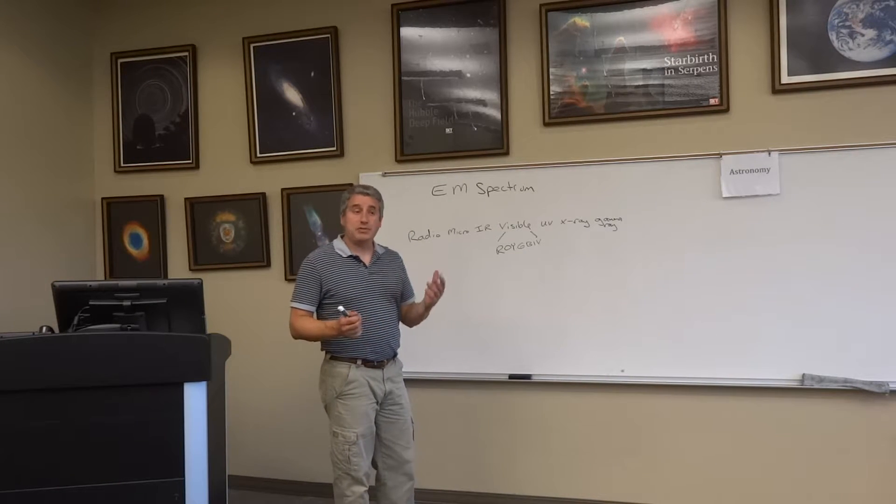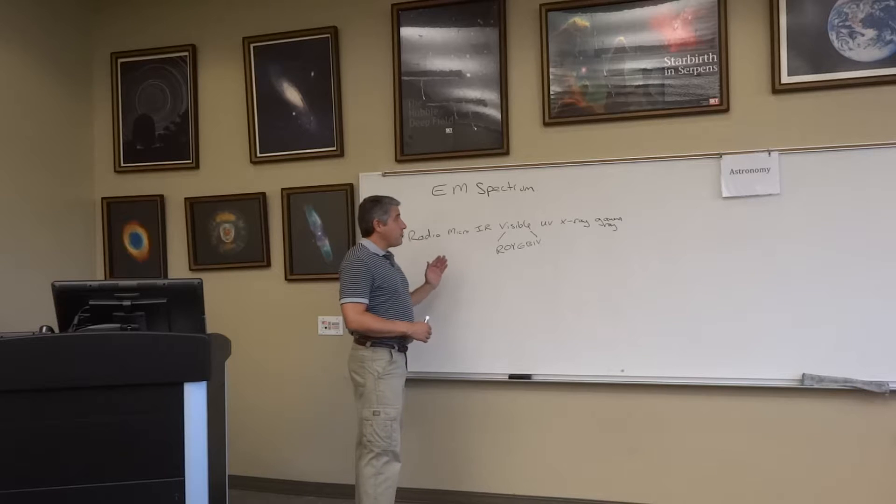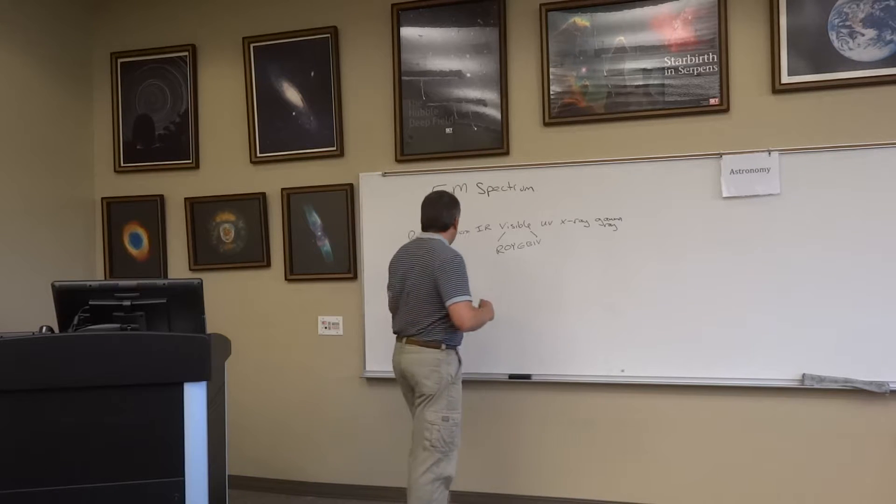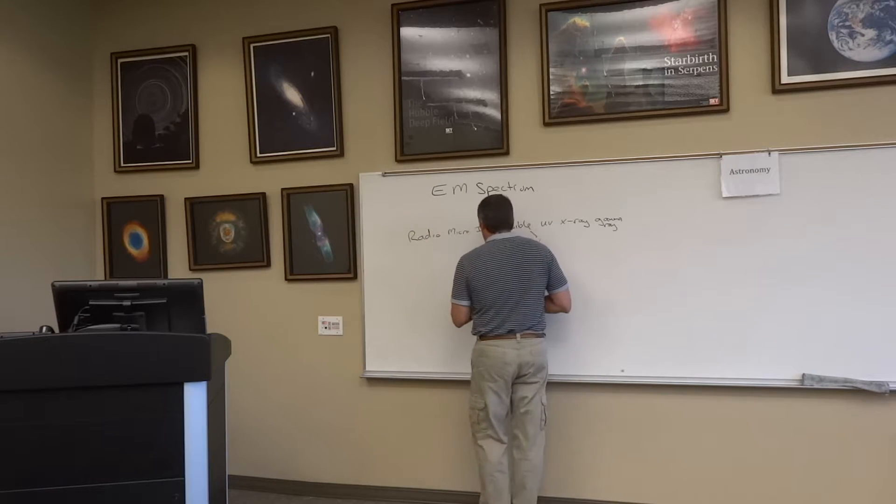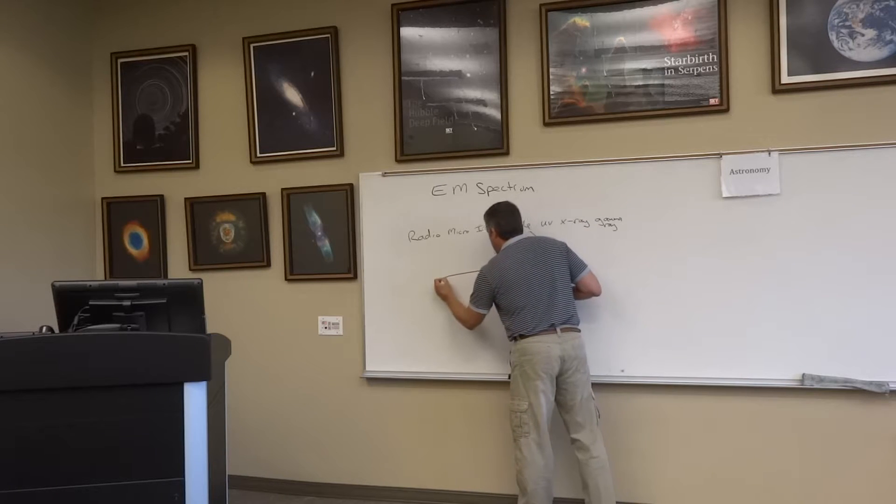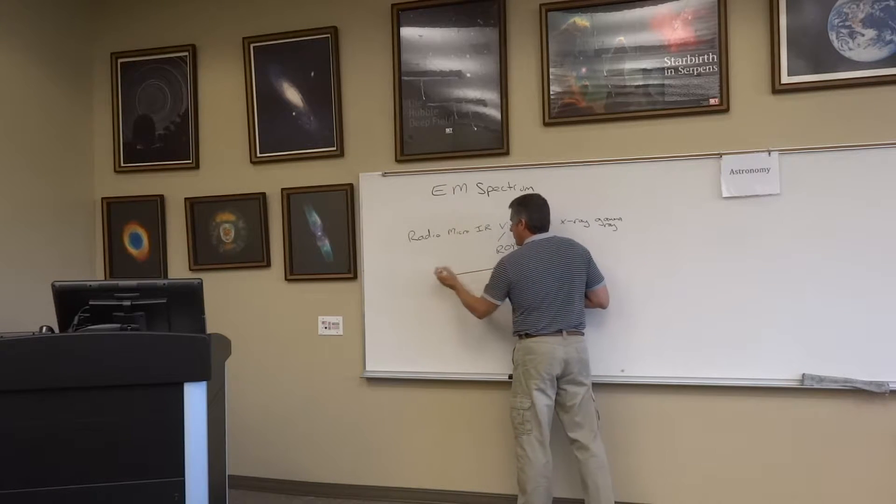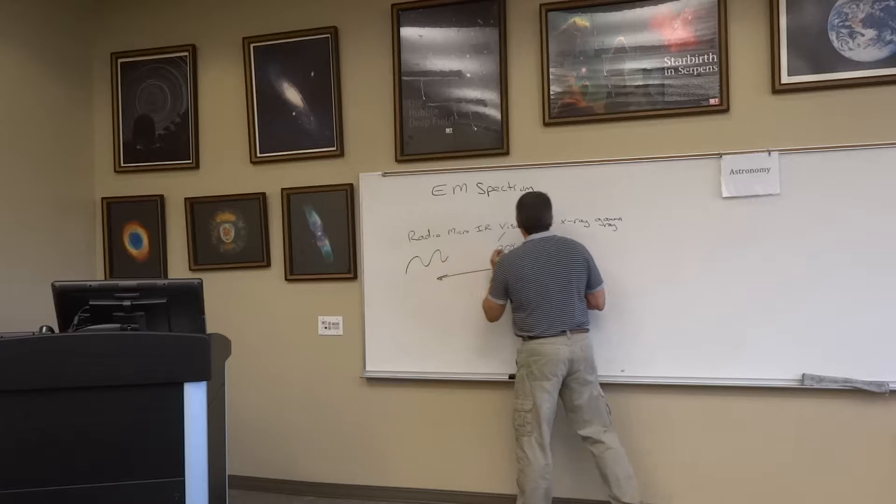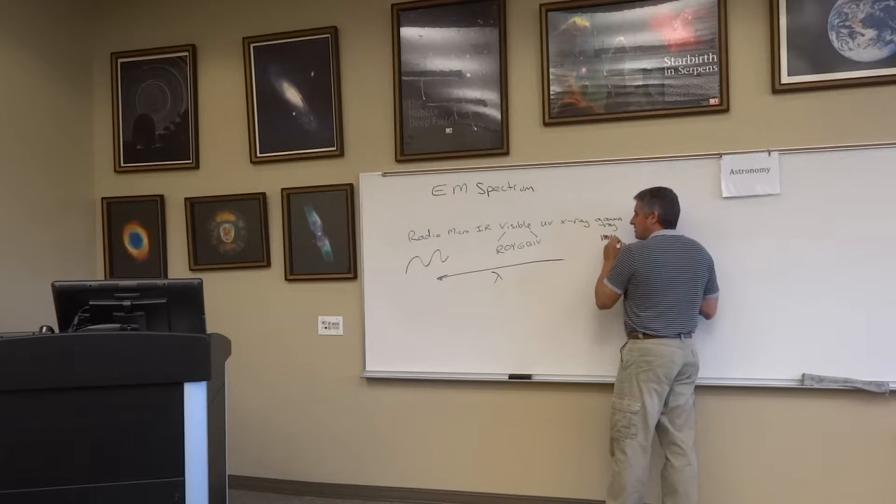So now that we got a sense for the different types of light, from radio down one end to gamma ray down the other, remember radio waves are long wavelength waves, so wavelength is increasing in this direction, long wavelength radio waves down to very short wavelength gamma rays.